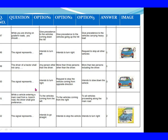Question 150: The signal represents. Option 1: Intends to turn right. Option 2: Request to stop the vehicle coming from the opposite direction. Option 3: Intends to slow down the vehicle. The right answer is Option 3: Intends to slow down the vehicle. Question 151: While a vehicle is entering a main road from a branch road, the driver shall give preference. Option 1: To the vehicles coming from the left. Option 2: To the vehicles coming from the right. Option 3: To all vehicles proceeding along the main road. The right answer is Option 3: To all vehicles proceeding along the main road.